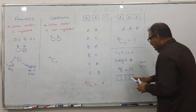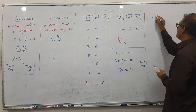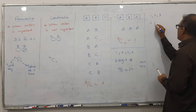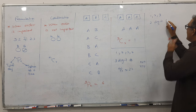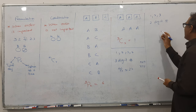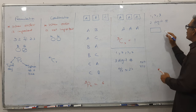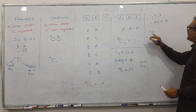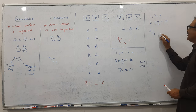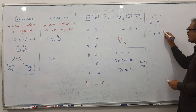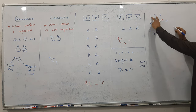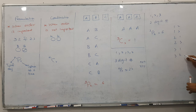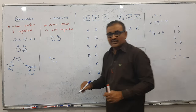Now another example. I have numbers 1, 2, 3 and I want to make a two-digit number. Three available, two to use. So three P two. The answer is six. I can show you: 12, 13, 21, 23, 31, 32. I can't have more than six options - that's it.